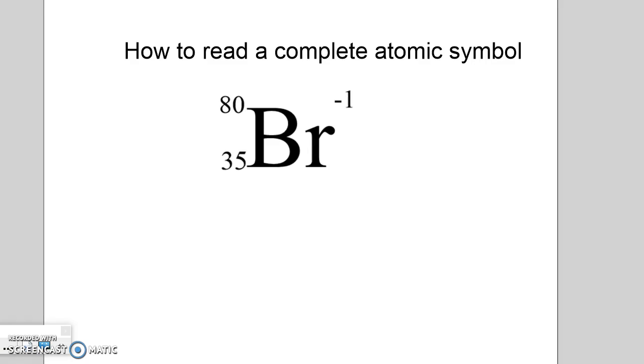The first thing that you want to do is figure out what element that is. We look in the center, and the big capital B and lowercase r tell us the chemical symbol, which is for bromine. So we know that we're dealing with a bromine atom of some sort.